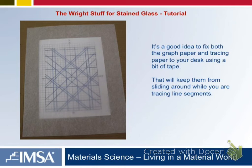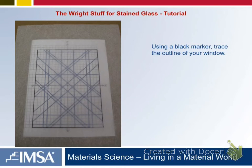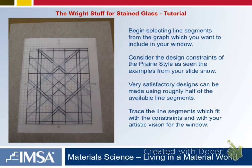When you are ready for tracing, make sure you've allowed enough time, and you might want to tape it down so it doesn't move. Using a black marker — which I'll supply — we'll make a thin black outline for the window, then pick and choose the line segments you want to include. Consider the design constraints of the prairie style from the examples on the slideshow. Very satisfactory designs can be made using roughly half of the available line segments. You'll trace the line segments which fit the constraints you see for your window.